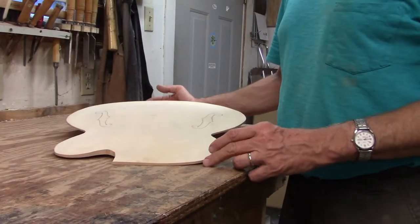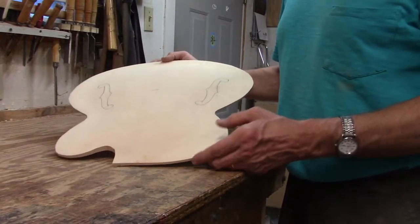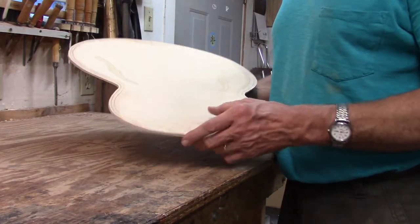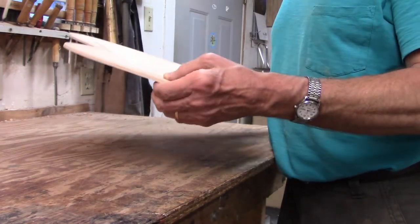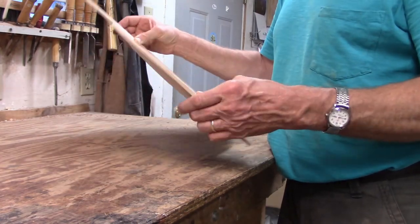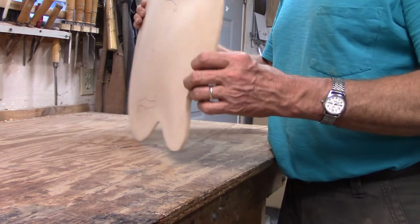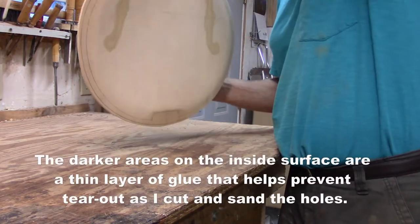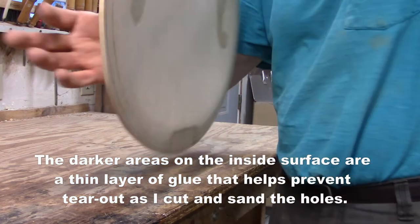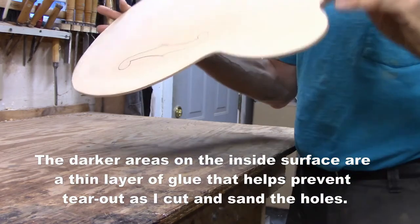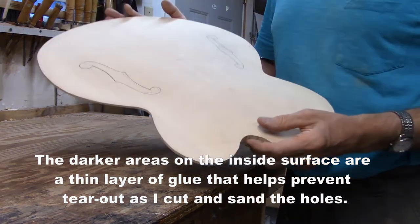I've been working on this archtop guitar soundboard. I've got it graduated to just where I want it to be. I'll do some final adjustments to thicknesses after I get the body assembled, but for right now it's ready for the next step. Got a nice tap, and so my next step is to cut the F holes.